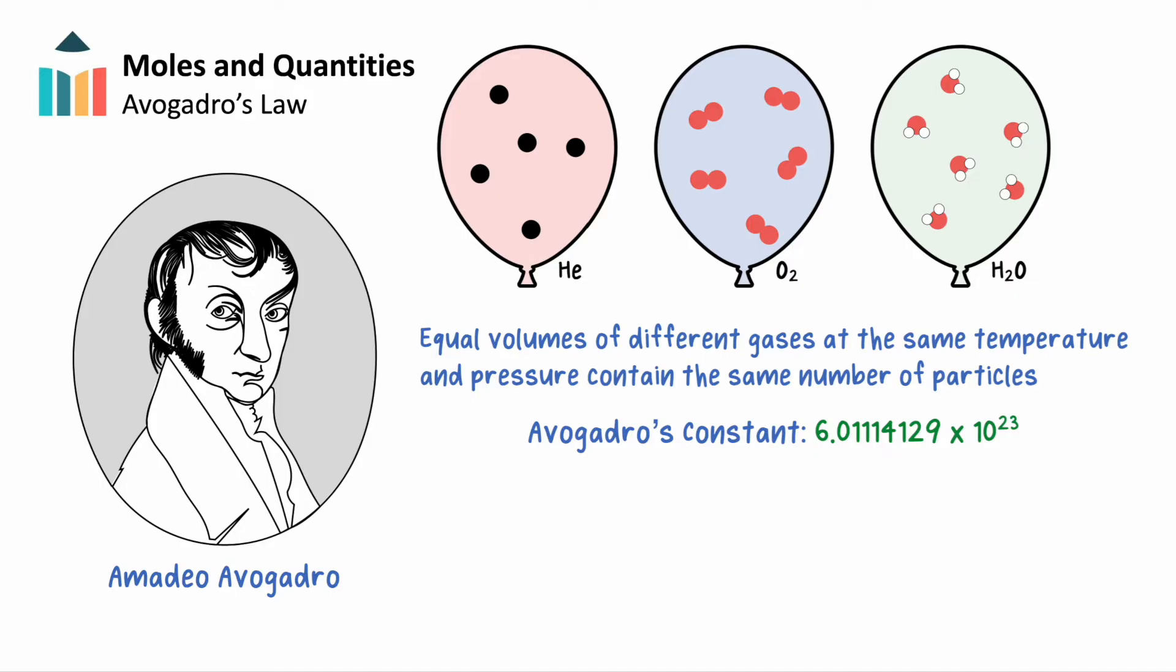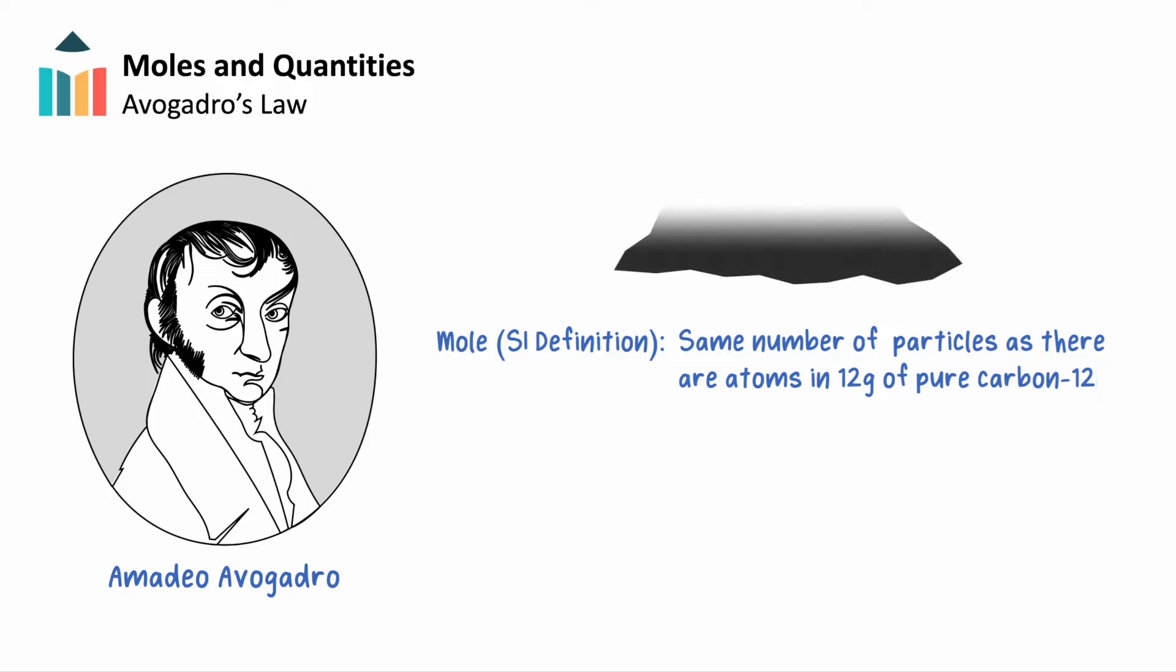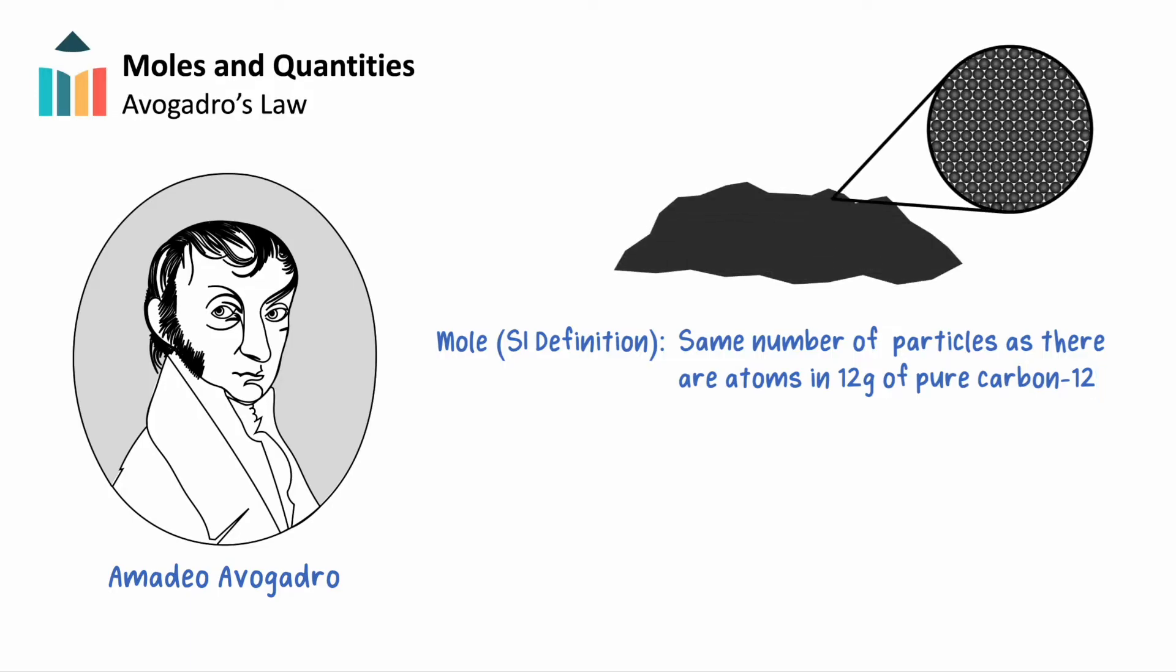The International System of Units, SI, defines the mole as follows. One mole, of any substance, contains the same number of particles as there are atoms in exactly 12 grams of the pure carbon-12 isotope.